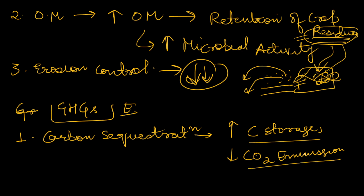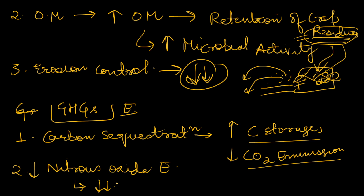Conservation tillage also leads to reduced nitrous oxide emissions. Due to less soil disturbance, it leads to lower nitrous oxide emissions compared to conventional tillage. In conventional tillage, high soil disturbance causes nitrous oxide present in the soil to escape into the air through processes like denitrification. But in conservation tillage, less soil disturbance means less nitrous oxide emission. This covers the effects of conservation tillage on greenhouse gas emissions.